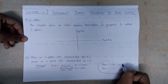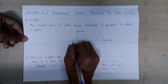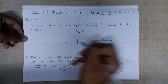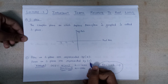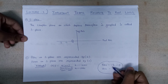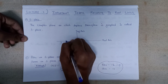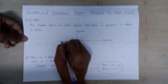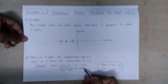To plot these poles and zeros on the S-plane, we mark three points: −1, −2, and −3. At −1, we place a circle (zero symbol). At −2, we place a cross (pole symbol). At −3, we place another cross (pole). This is the basic representation of poles and zeros on the S-plane.